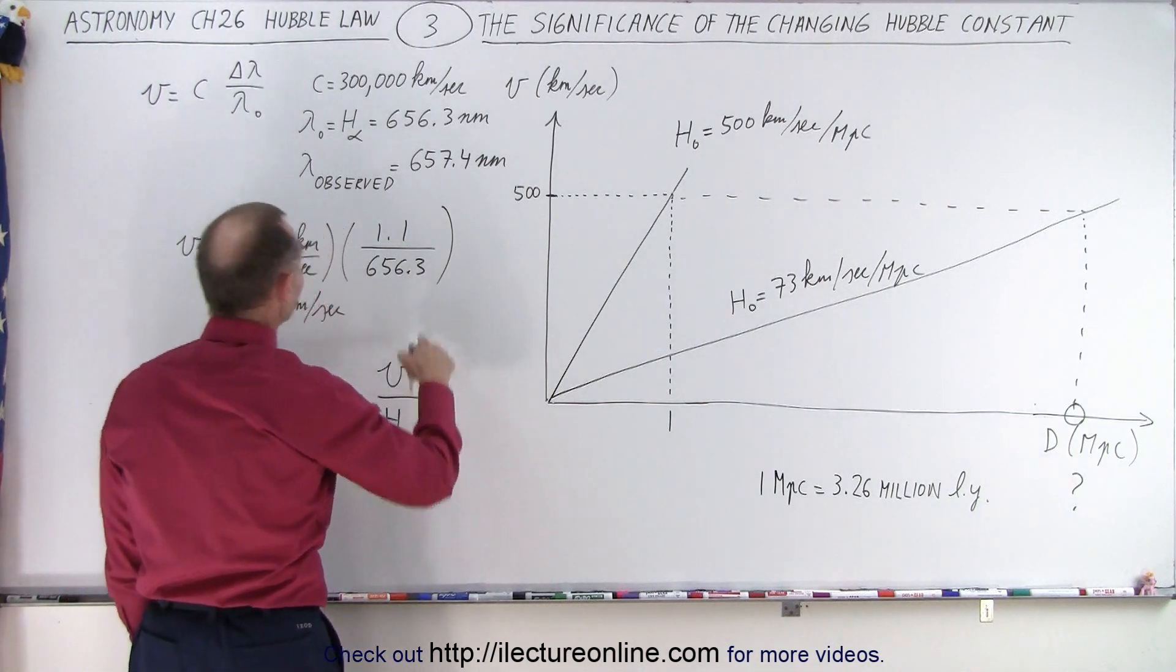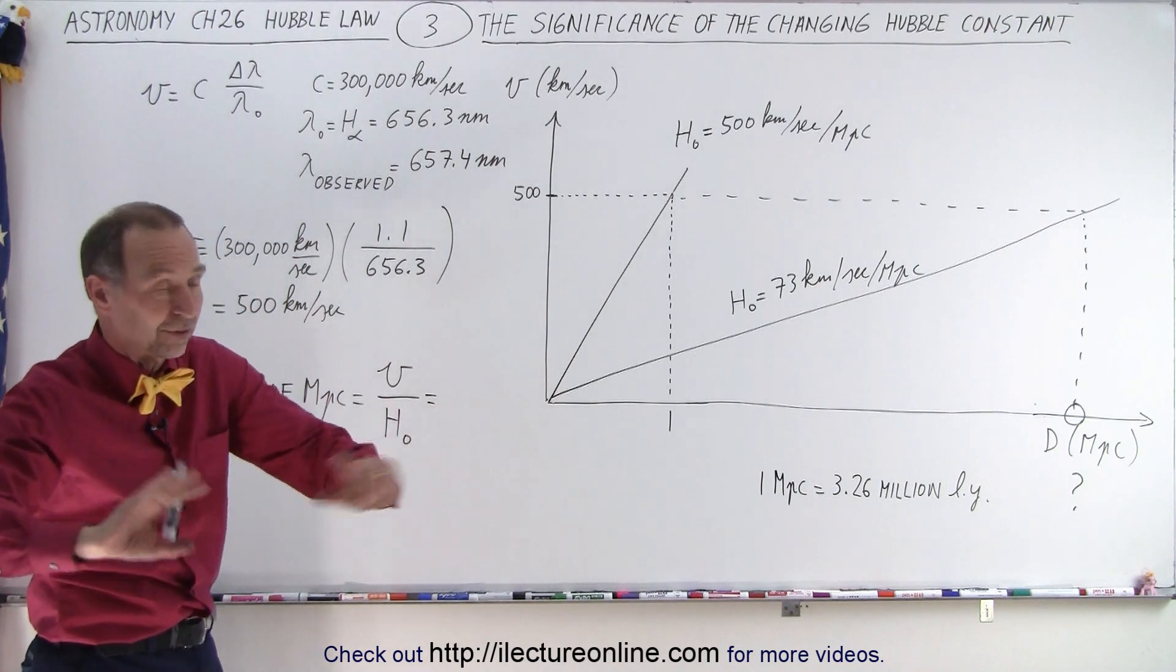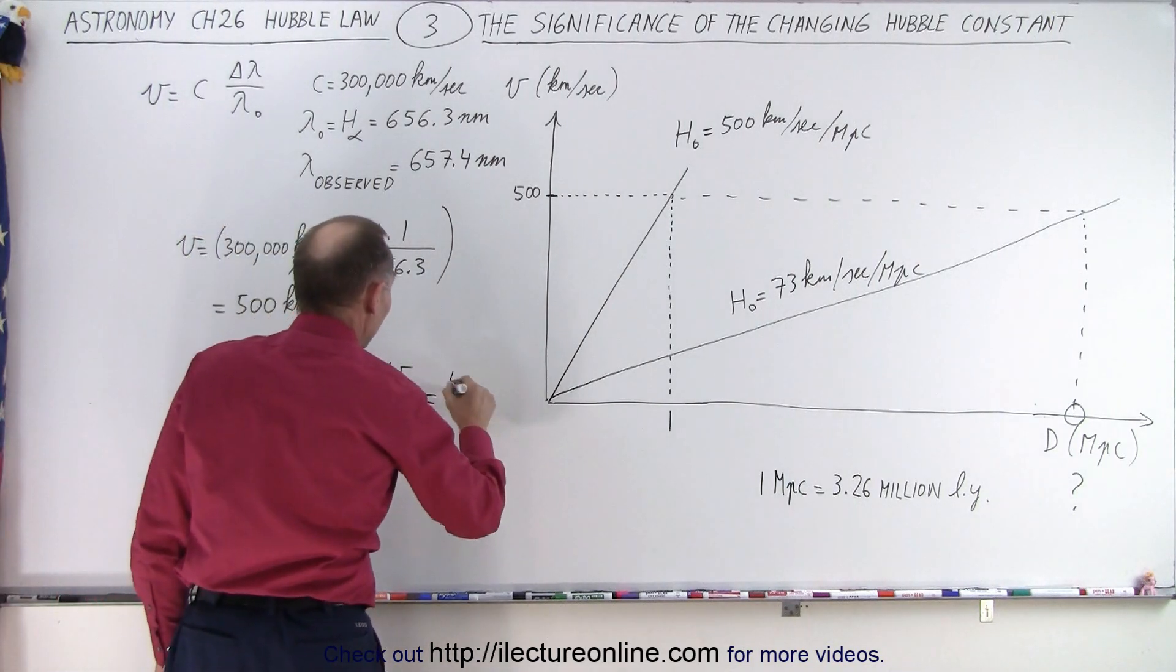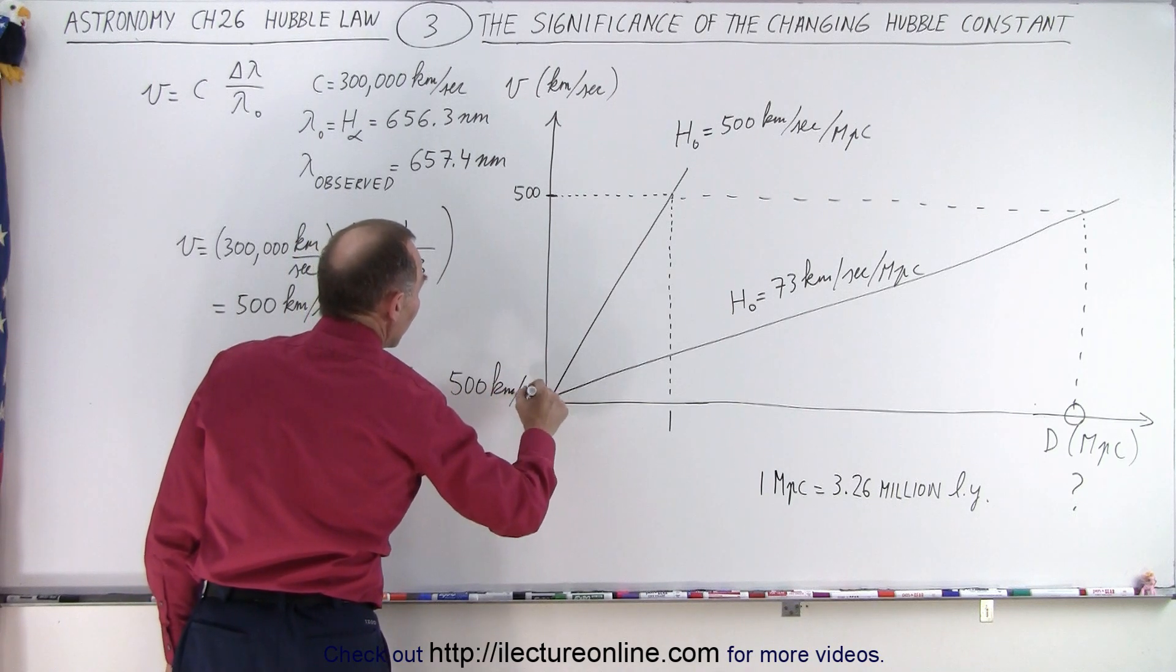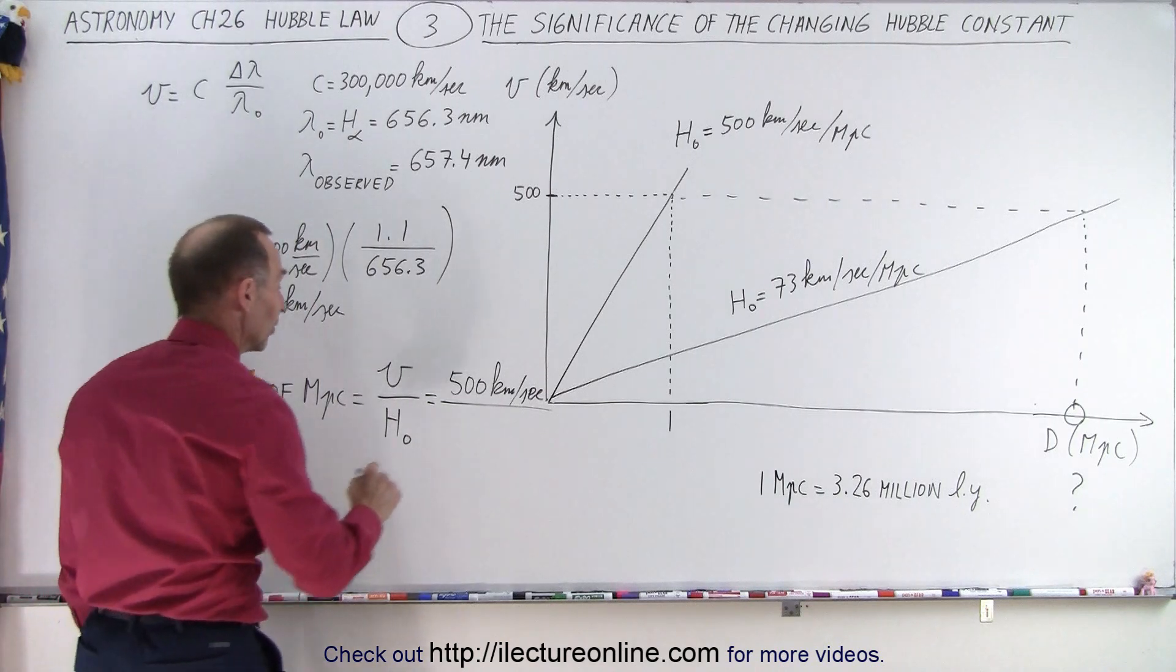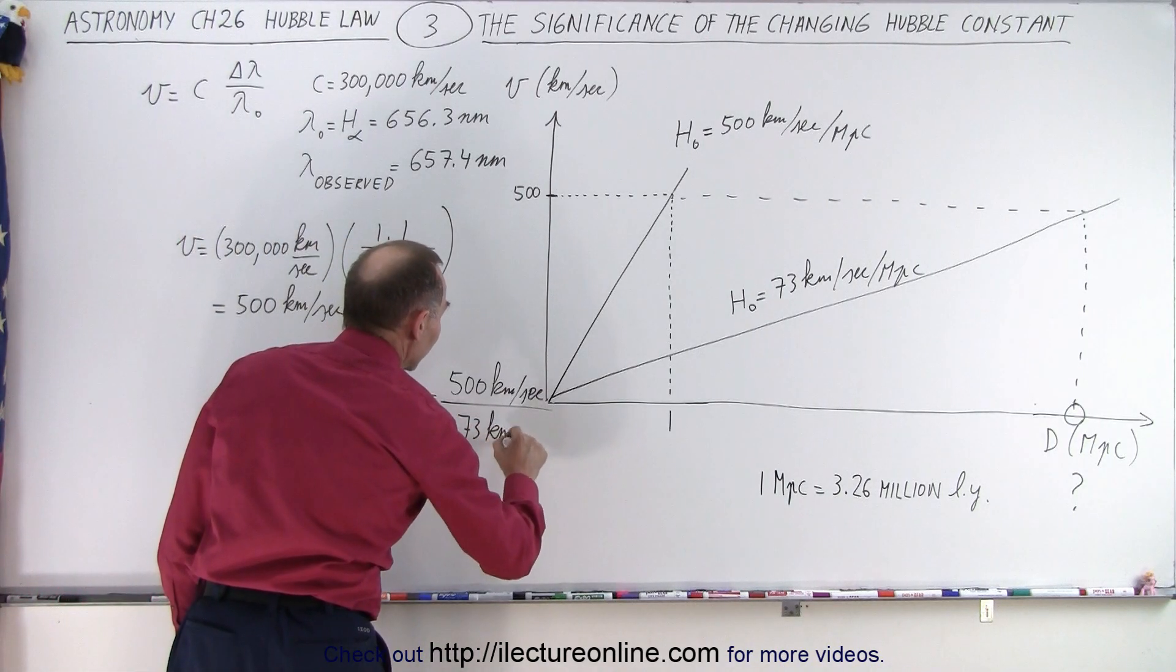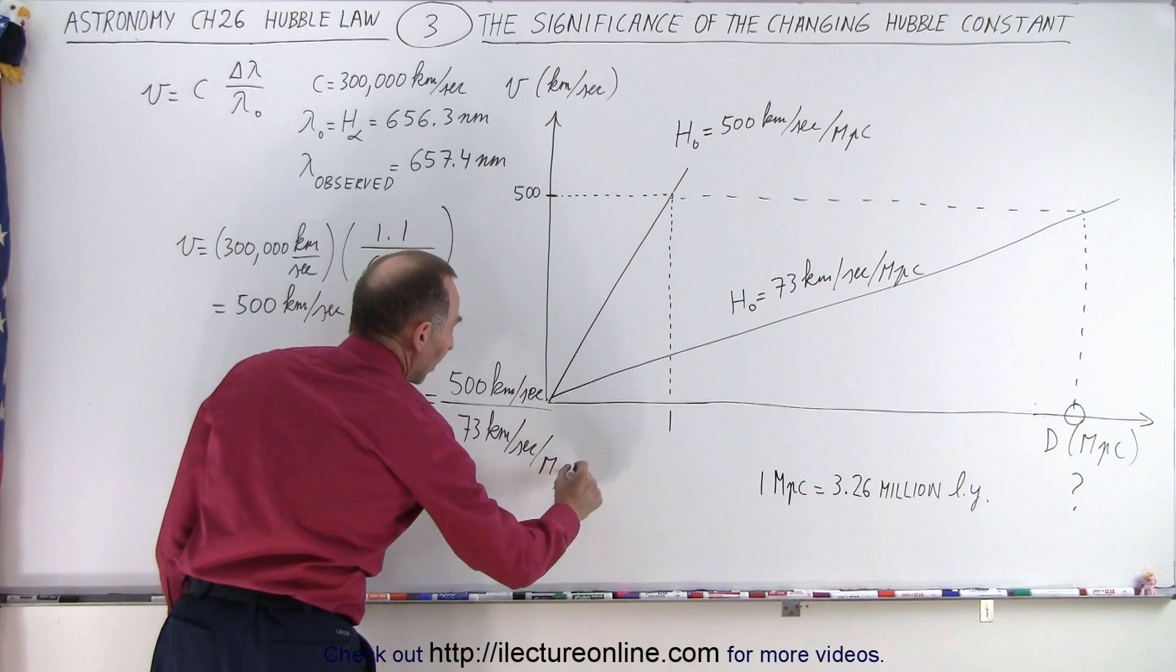So the number of megaparsecs is equal to the velocity that we have divided by H sub nought, the Hubble constant. So in this case, we said that the velocity measured, that would not change. It's still the same galaxy moving at the same speed. That would still be the same thing. It would be 500 kilometers per second. That's what we measure. But now we divide it by a very different Hubble constant. The new Hubble constant, which we think is 73 kilometers per second per megaparsec.